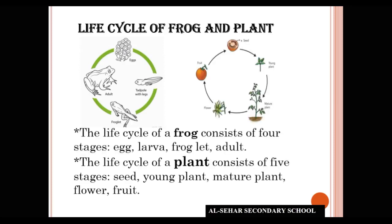The life cycle of frog consists of four stages. First, egg. After two weeks, egg converts into tadpole. After eight weeks, tadpole converts into froglet. Then after ten weeks, frog is adult.